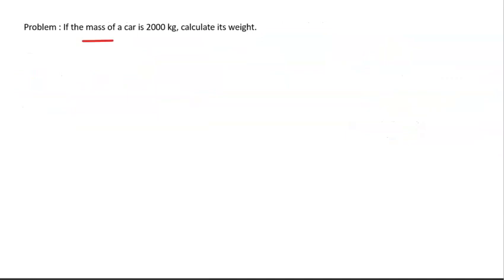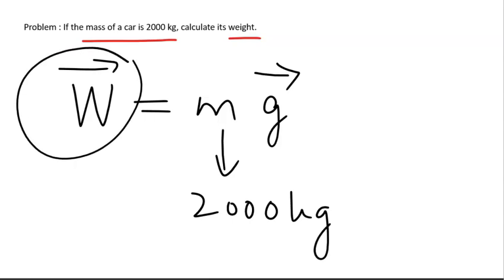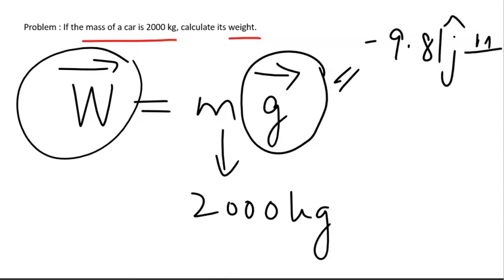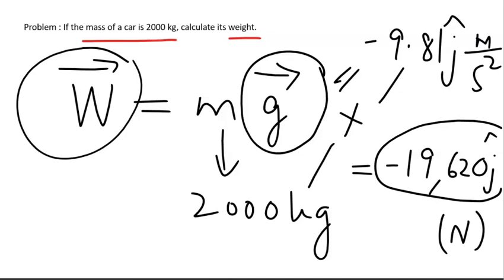Let's look at this problem: if the mass of a car is 2,000 kg, calculate its weight. Mass is a scalar and weight is a vector. Weight is a form of force. The mass is 2,000 kg, and the gravitational acceleration on Earth is −9.81 ĵ m/s². Multiplying these gives the weight as −19,620 ĵ Newtons. The negative ĵ direction means the weight of this car is heading downward, as it should.